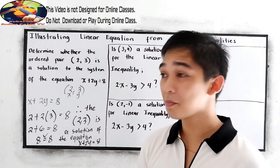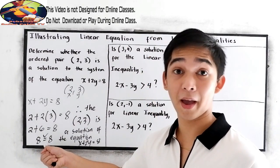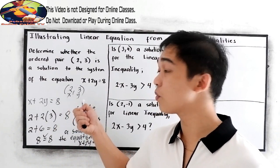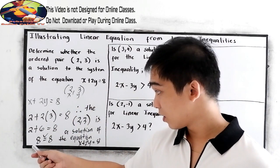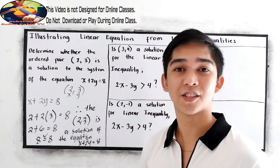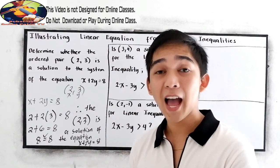Why is it a solution? Because when we test by substituting the values for x and y, we come up with an equal answer on both sides.